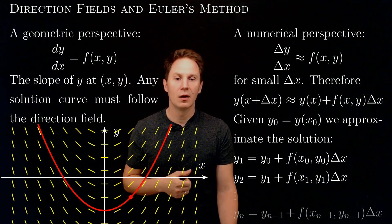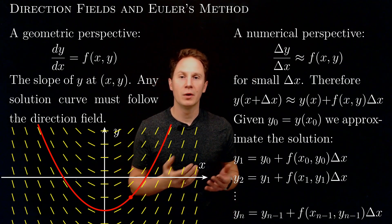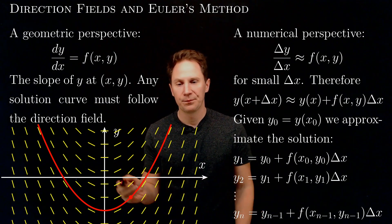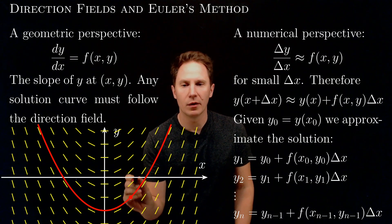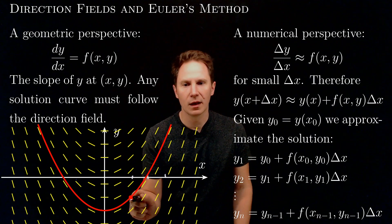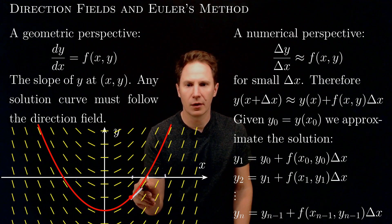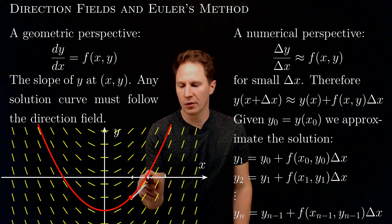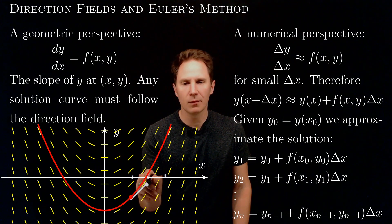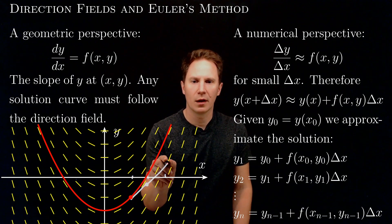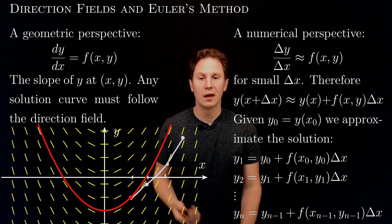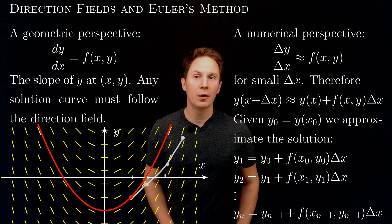This iteration leads us to the general formula for the nth iteration, which is called Euler's method to solve first-order differential equations. Using this method means taking small steps of Δx along the x-axis — following the direction field for a distance Δx, then continuing in the direction the field indicates for another Δx, and so on — obtaining an approximation to the solution curve, which as you can see is really just an approximation.